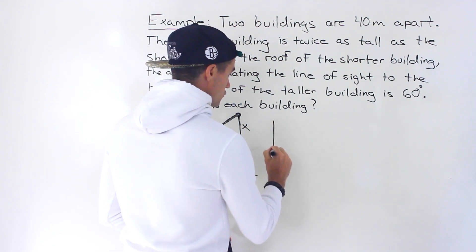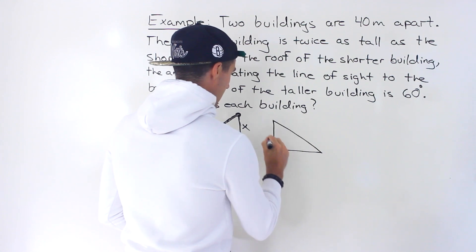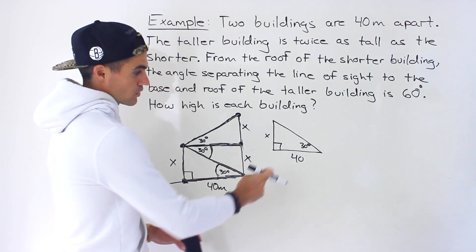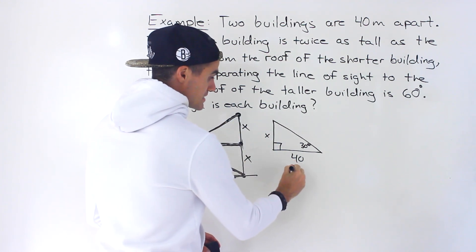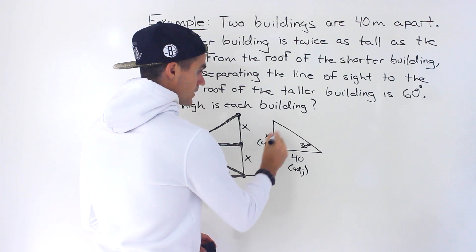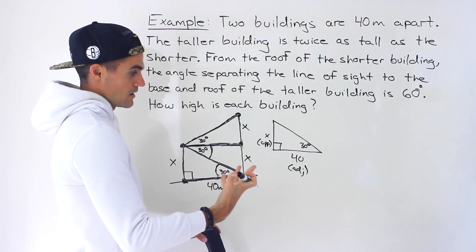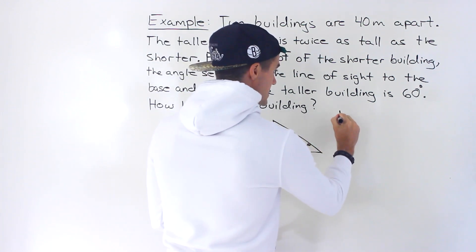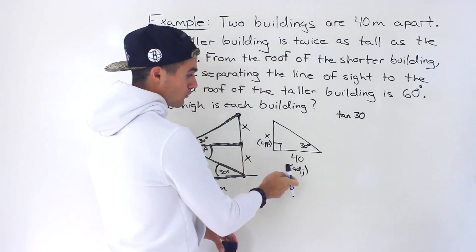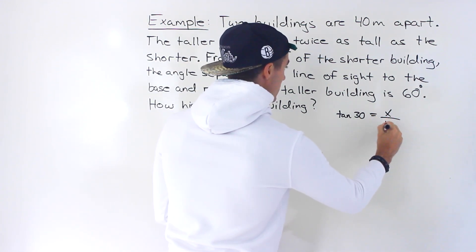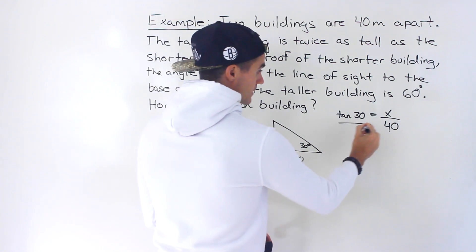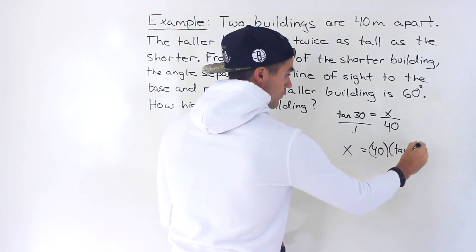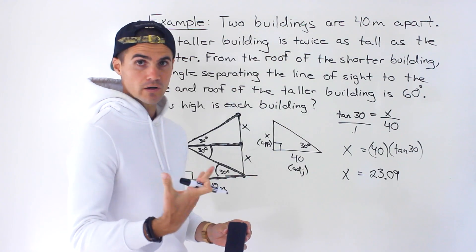Taking that right triangle: we have x as the opposite side, 40 as the adjacent side, and 30 degrees as the reference angle. Using the tangent ratio — tan equals opposite over adjacent — we set up tan(30°) = x/40. Cross-multiplying gives x = 40 × tan(30°), which calculates to x ≈ 23.09.